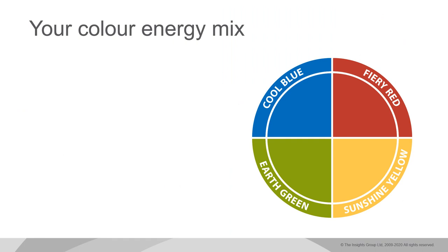Earth Green: people who lead with Earth Green energy tend to be more caring, encouraging, sharing, patient, and relaxed. I try to demonstrate an Earth Green tone and pace, showing the contrast between Earth Green and its opposite, Fiery Red. Always make sure to mention the dynamic of opposites between Fiery Red and Earth Green, and of course Sunshine Yellow and Cool Blue. Also let them know that some people's top two preferences may in fact be opposites — Carl Jung called those creative types — and I'll talk about the gifts of those creative types later.